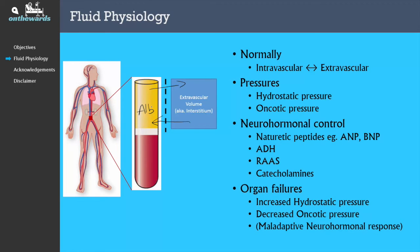Organ failures complicate the fluid balance situation. There are two situations where there may be increased hydrostatic pressure. In congestive cardiac failure, the pump of the body — the heart — isn't able to move fluid around as efficiently as before. That leads to a build-up of fluid in the intravascular space, leading to increased hydrostatic pressure and movement of fluid out into the extravascular space. A similar situation occurs in renal failure, where the kidneys aren't able to excrete fluid as efficiently, and therefore there is a backup of fluid into the intravascular space, again leading to increased hydrostatic pressure and extravasation into the extravascular space.